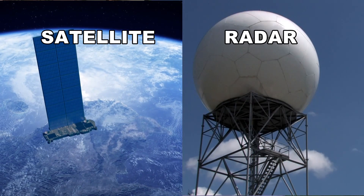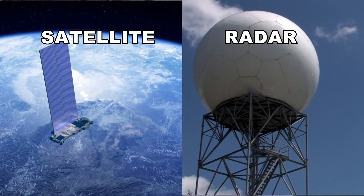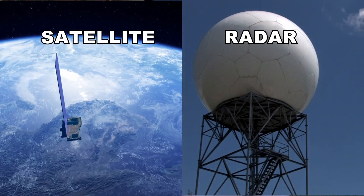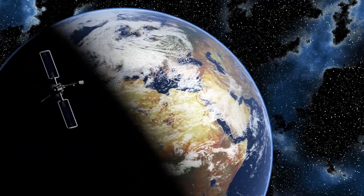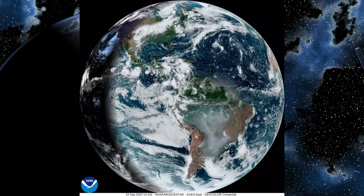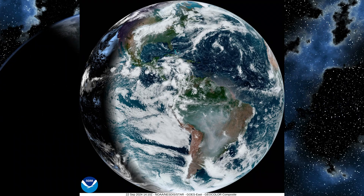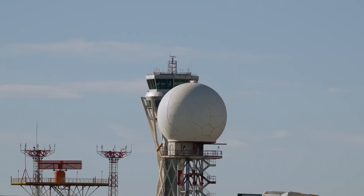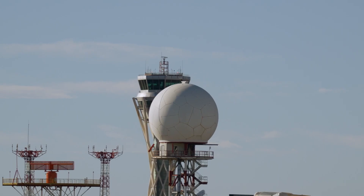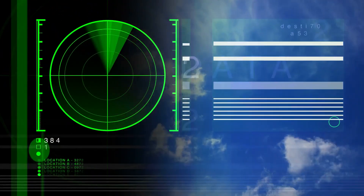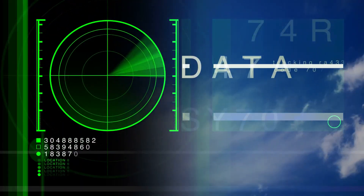The key difference between a weather radar and a weather satellite is where they're located. A weather radar is on the ground while a satellite is up there in space. It can be either polar orbiting or geostationary. The geostationary ones are the ones that give us these fantastic continuous images of weather all over the world.